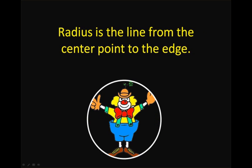The radius is the line from the center point to the edge — again, from our clown's stomach to the edge. That gives us our radius. And if we draw another line, that's going to be the same. The radius will always be the same if we go from the center point to the edge of our circle.